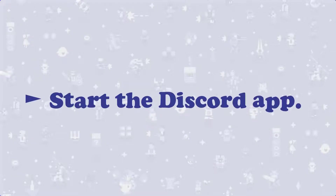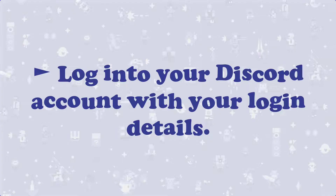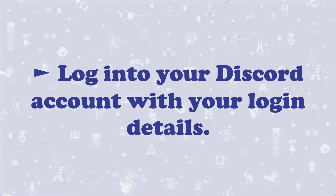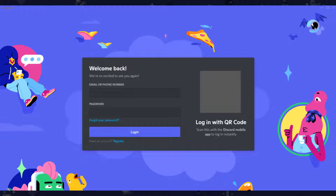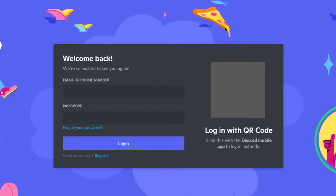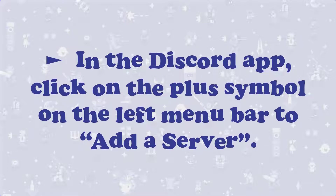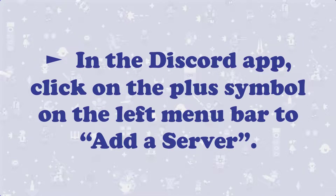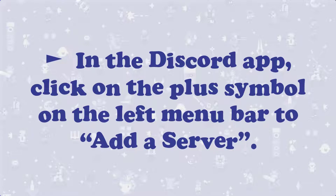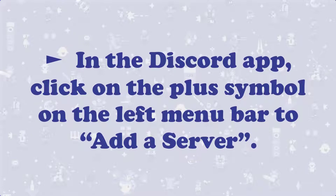Step 1. Start the Discord app for desktop or smartphone or tablet and log into your Discord account with your login details. Step 2. In the Discord app, click on the plus symbol on the left menu bar to add a server.